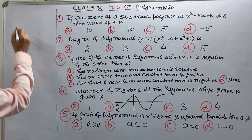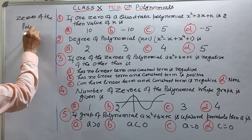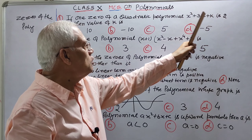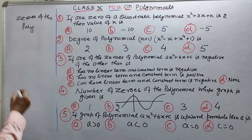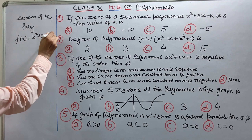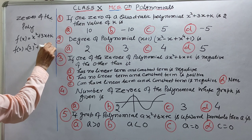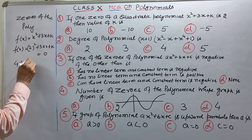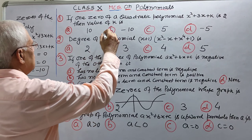Ab zeros of the polynomial — zeros of the polynomial ka matlab hota hai ki agar 2 iska zero hai, iska matlab hai if we substitute x equal to 2 in this polynomial, the value of the polynomial becomes 0. Maane f(x) = x square plus 3x plus k. x equal to 2 rakh dijiye: 2 square plus 3 into 2 plus k = 0. So 4 plus 6 plus k equal to 0, toh k equal to minus 10. That is answer is B.